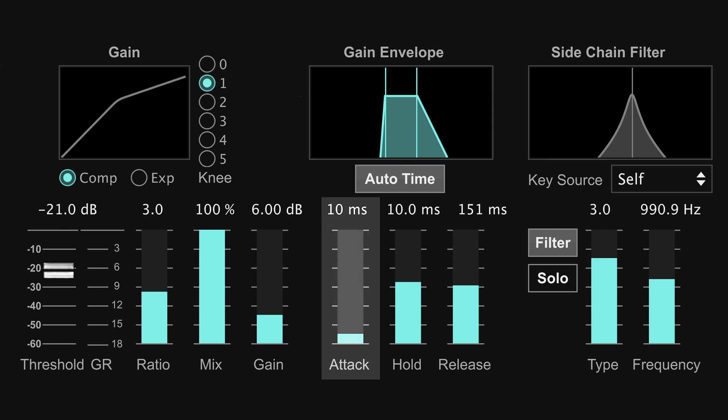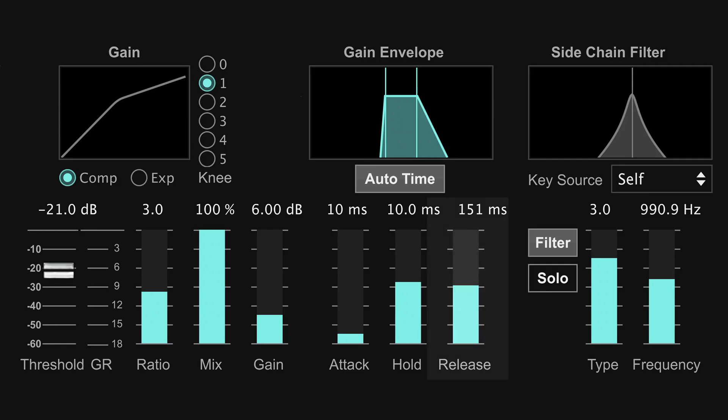To properly set a compressor, you need to understand all of those different settings. First up is attack, which sets the speed at which the compressor activates after the signal crosses over the threshold. A slower attack time will allow the beginning of the signal to pass through untouched before applying the compressor, whereas a fast attack time will apply the compressor almost immediately.